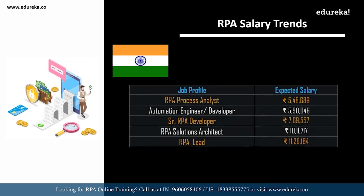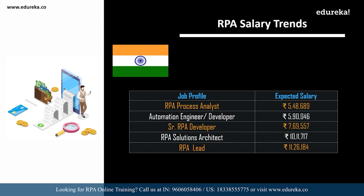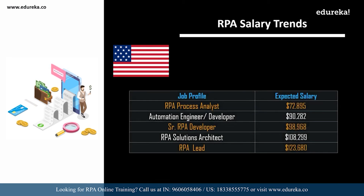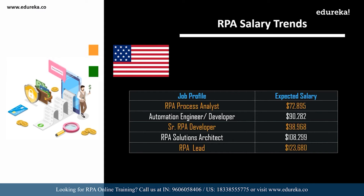In India, an RPA process analyst can expect around 5,48,000 per annum; an automation engineer or developer around 5,90,000; a senior RPA developer around 7,69,000; an RPA solutions architect around 10,11,000; and an RPA lead around 11,26,000. In the USA, an RPA process analyst can expect around 72,000 dollars; automation engineer around 90,000; senior RPA developer around 98,000; solutions architect around 1,00,000; and an RPA lead around 1,23,000 dollars.